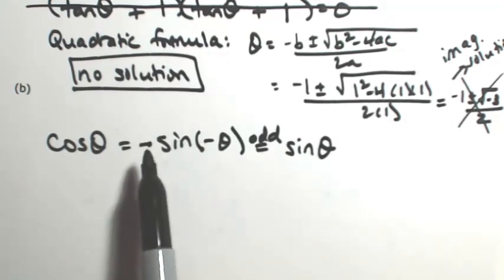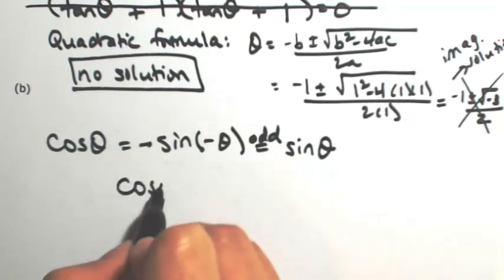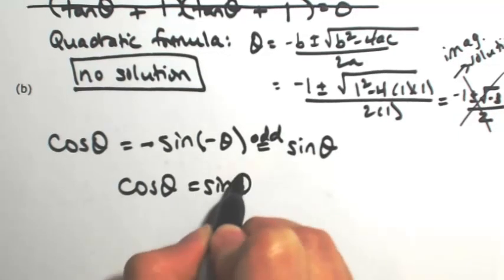We're just going to get back the sine of theta. So again, because sine was an odd function, that negative came out. So negative times negative is positive. So really this equation is equivalent to the cosine of theta equaling the sine of theta.